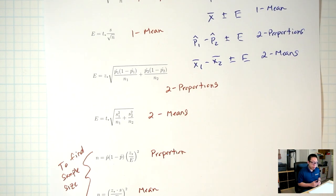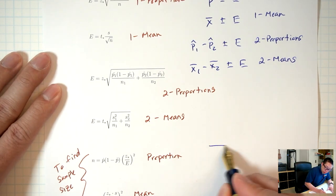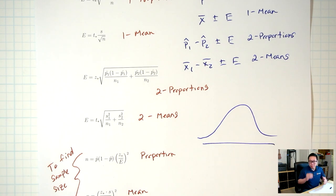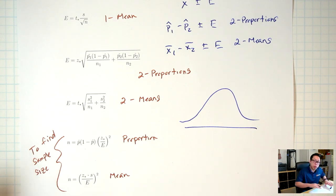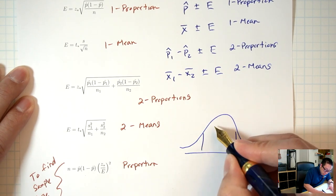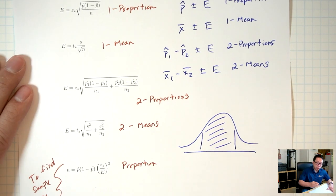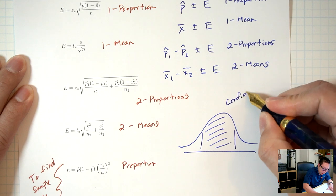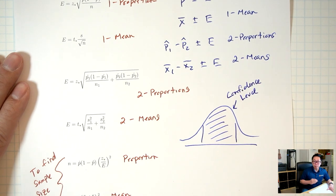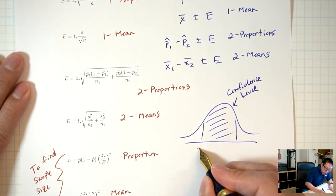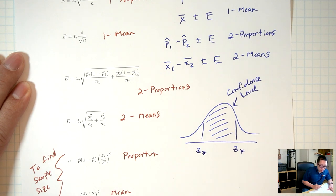All of these formulas involve either a z-star or a t-star. How do you find the z-star and t-star? They all involve this picture — the same picture we've been drawing for the last four or five chapters. For hypothesis tests, the picture could be left-tailed, right-tailed, or two-tailed. For confidence intervals, it's always going to be shaded in the middle. The shaded area in the middle is the confidence level. Depending on whether you're talking about proportions or means, you're either finding the z-star or the t-star.